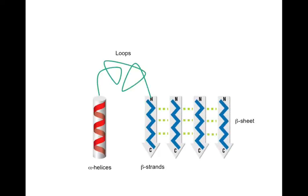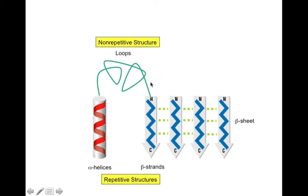So these alpha helix and beta sheets are joined together by loops or random coils. So the alpha helix and beta strands are repetitive units whereas the loops are basically just random or non-repetitive structures.